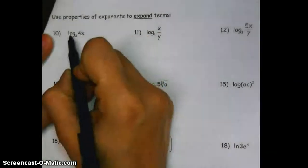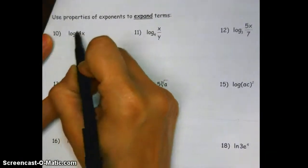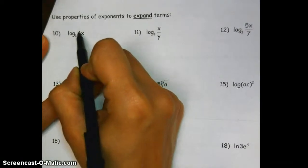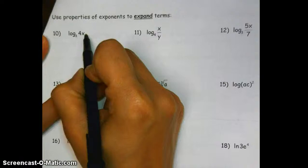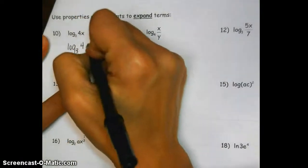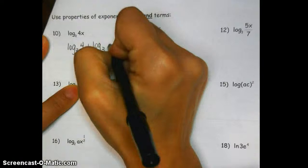Since we have log base 3 of an argument that I can recognize as a product, that means in expanded form, these are actually going to be addition. So we're doing log base 3 of 4 plus log base 3 of x.